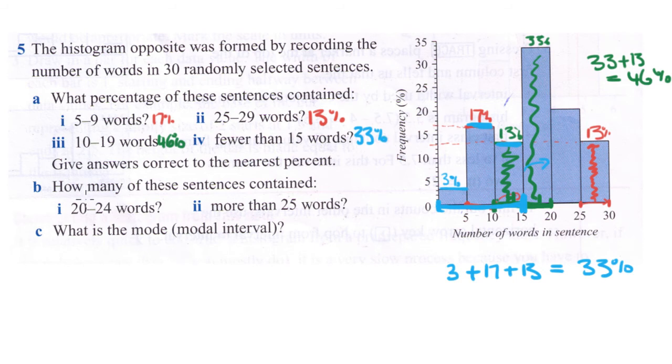The next part asks how many of these sentences contained this many words. They're not asking for a percentage anymore, they're asking for how many actual sentences. You need to use this information that there were 30 sentences all up. We know the percentages but to figure out the words we'll have to translate that into a percentage of this 30.